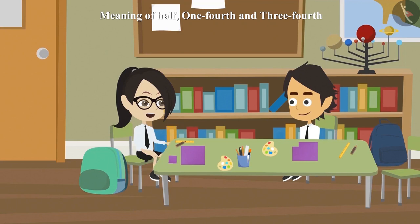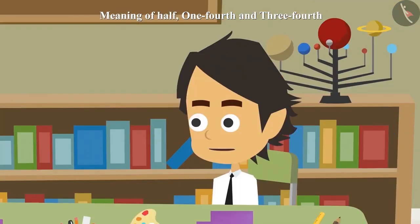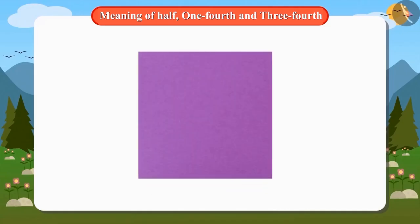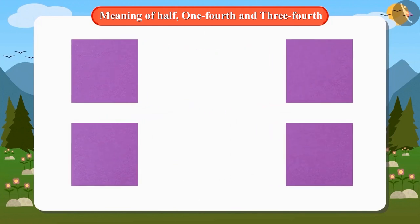But it is wrong Ayushman. It is half of half. Then how is it wrong? Look, when we divide a shape into four equal parts, one part is called the one-fourth of that object.